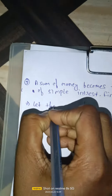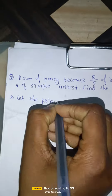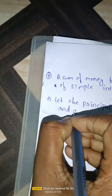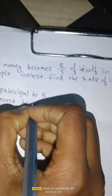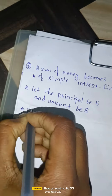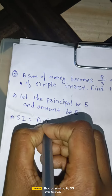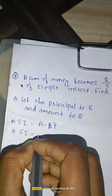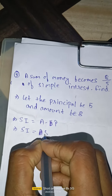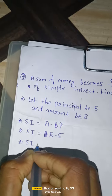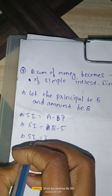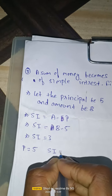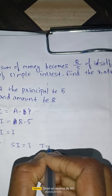Let the principal be 5 and the amount be 8. SI equals A minus P, so SI equals 8 minus 5, which gives SI equal to 3. So P equals 5, SI equals 3, and T equals 5.